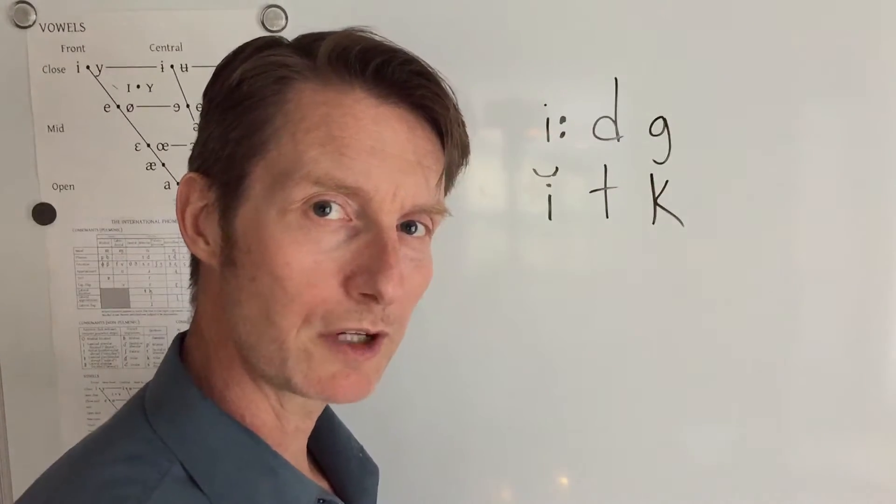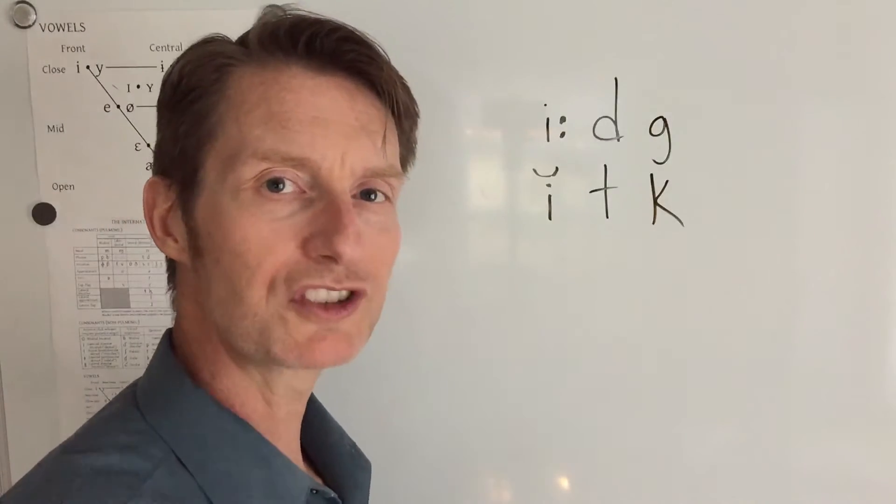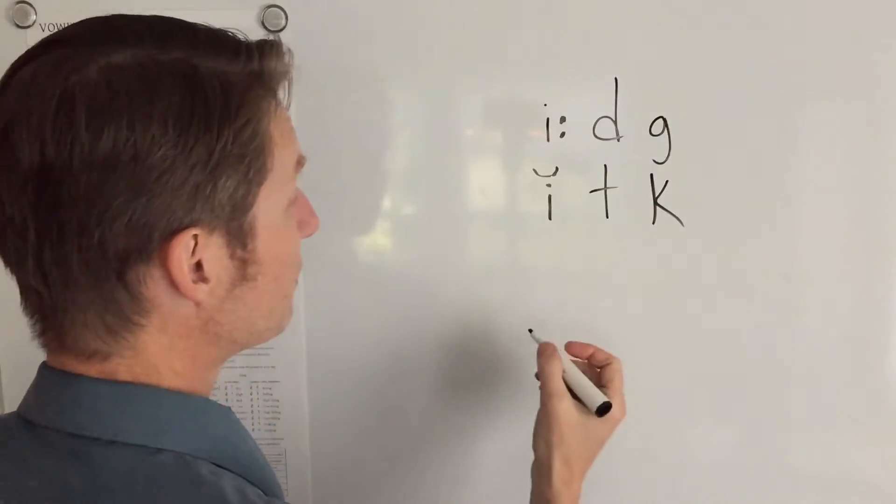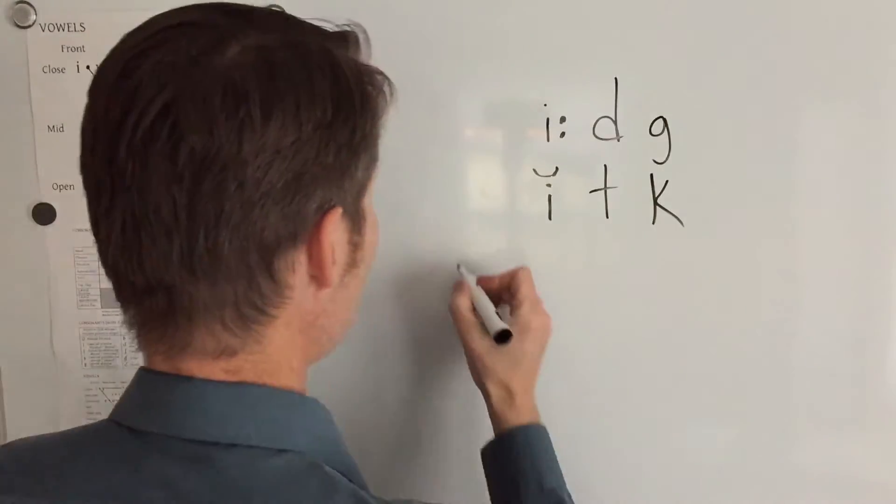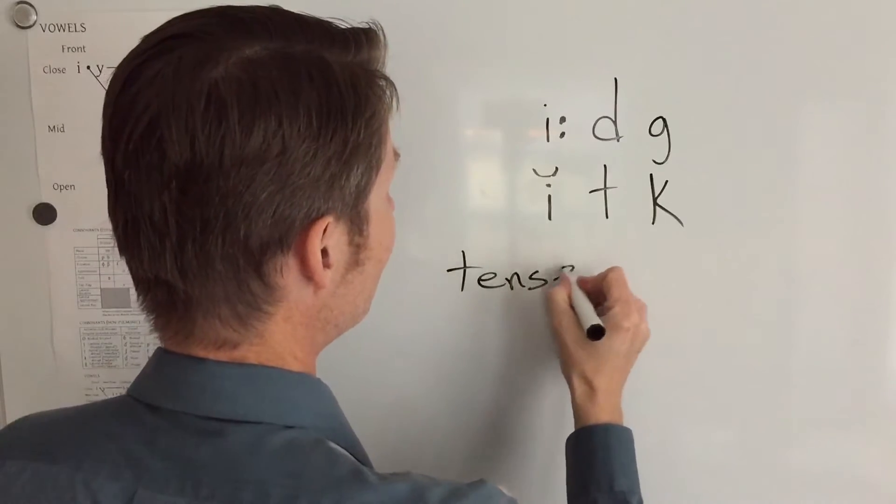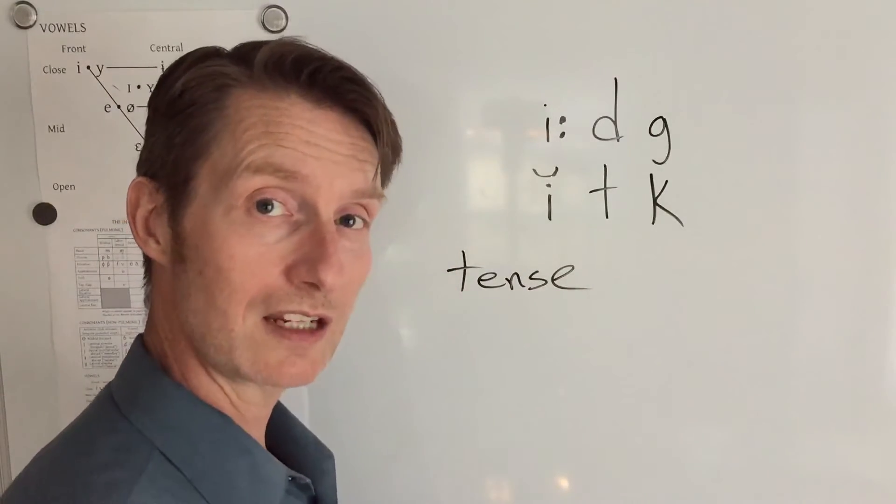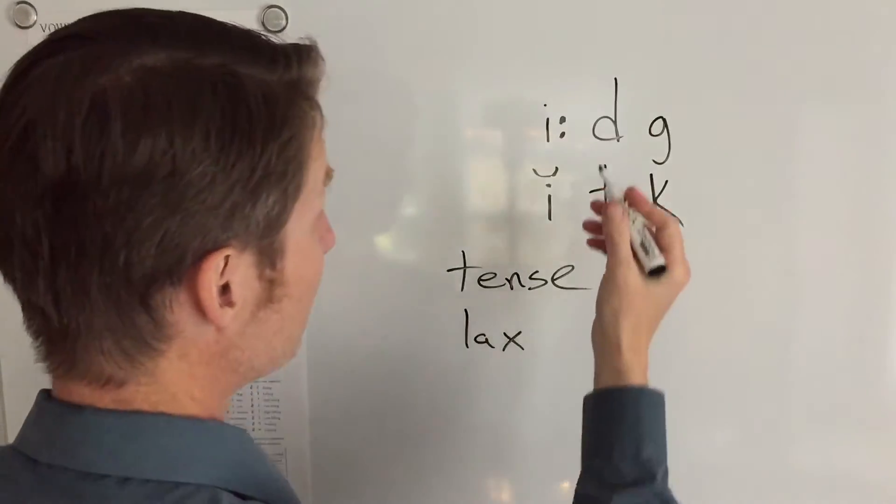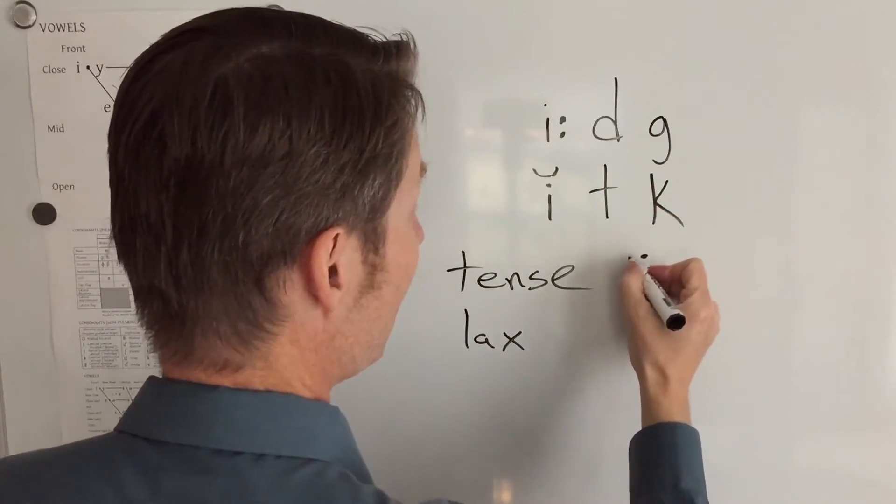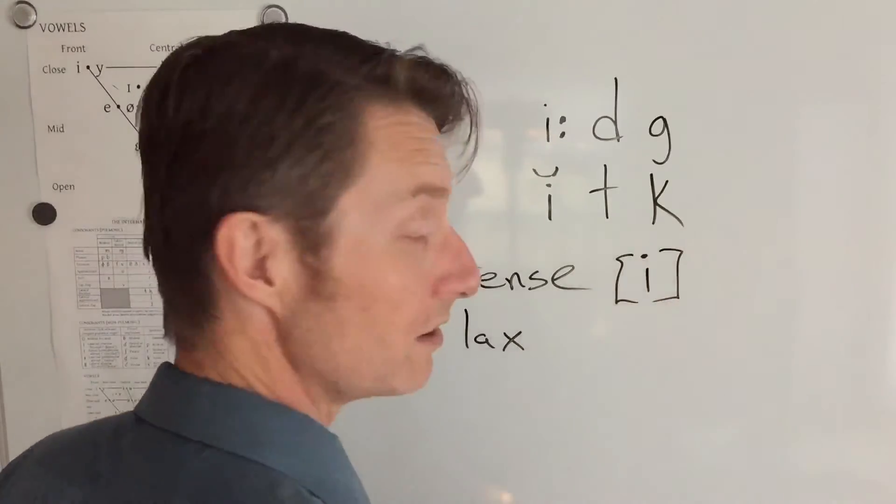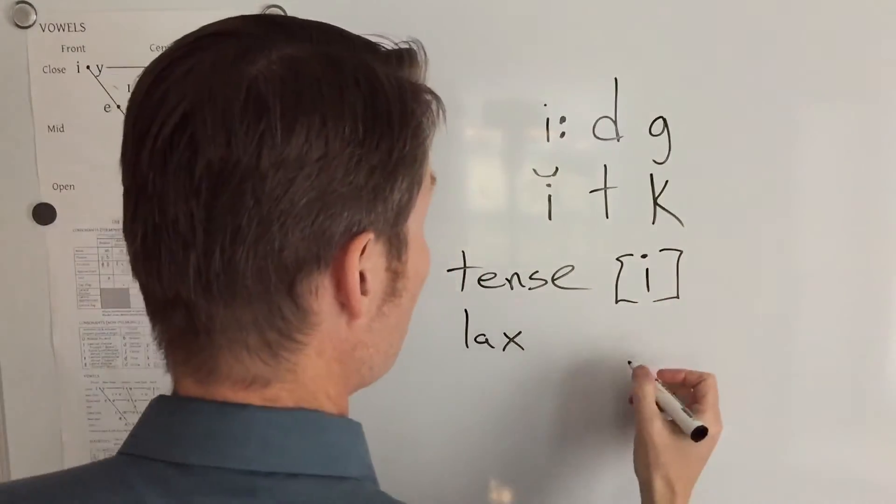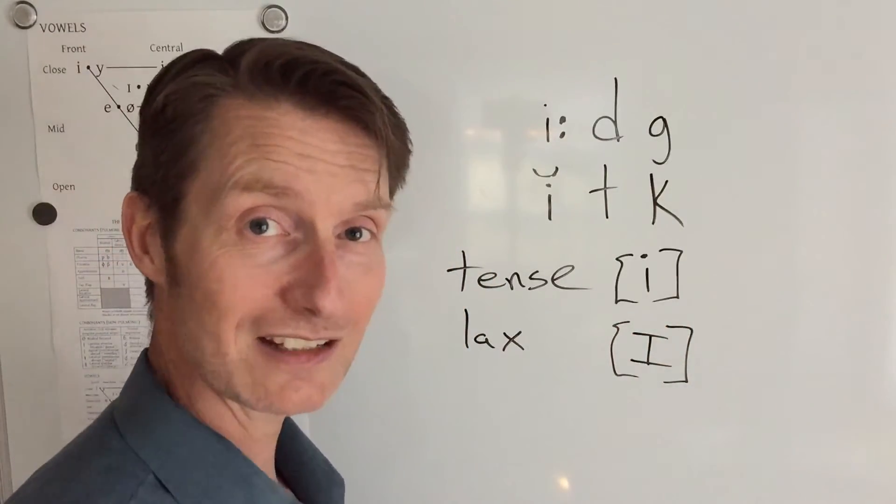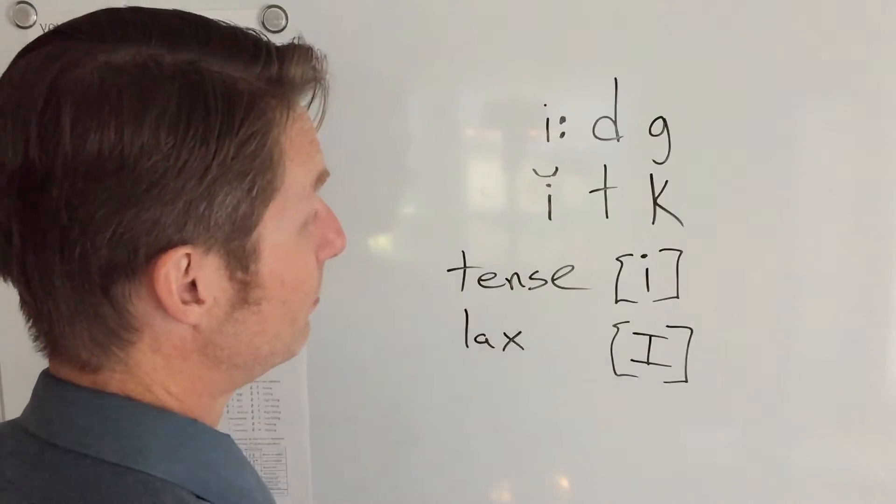One other thing that I want to throw at you is that there are vowels that tend to be a little bit longer and vowels that tend to be a little bit shorter. And the ones that tend to be longer are oftentimes called tense vowels, and the ones that tend to be a little bit shorter are oftentimes called lax vowels. So for example, an E sound is considered a tense vowel, whereas the I sound, as in sit, tends to be considered a lax vowel, so it tends to be shorter.